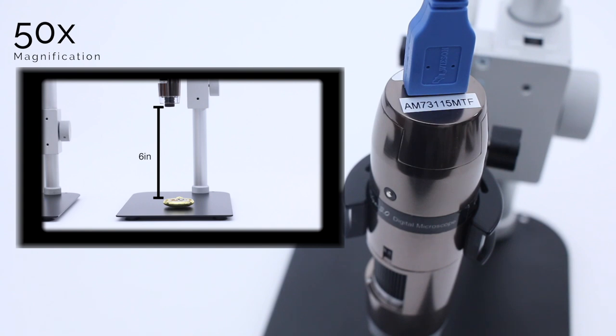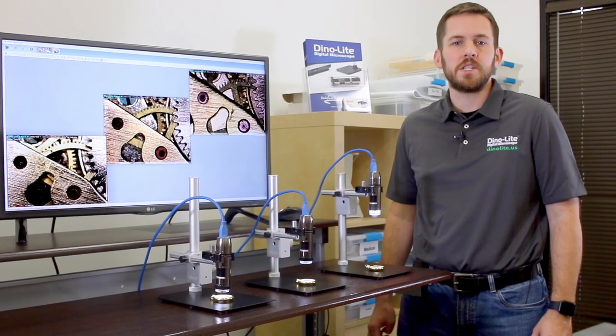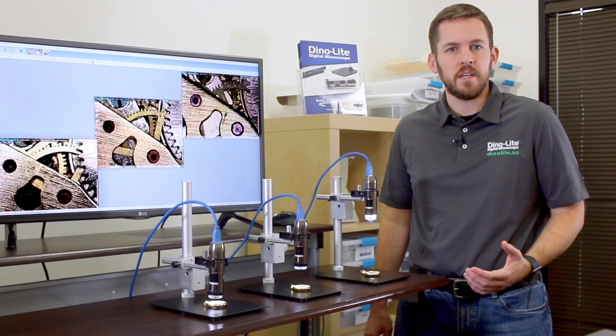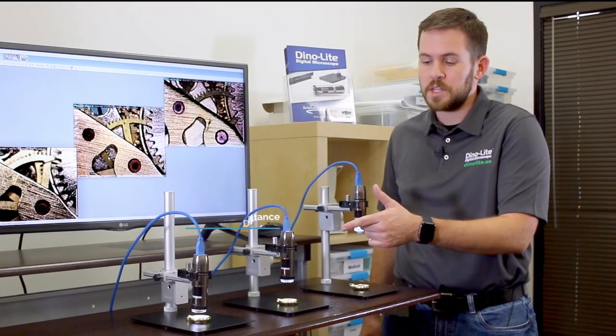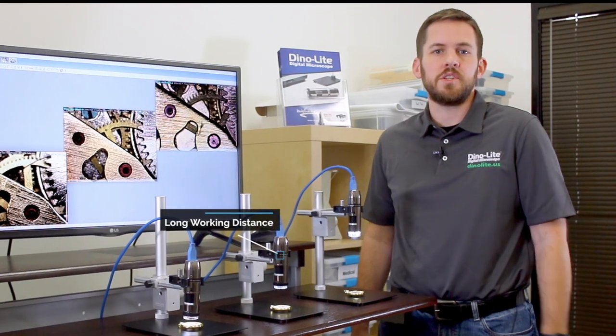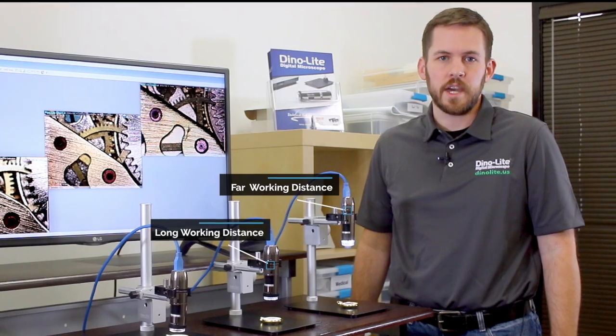Please keep in mind there is a trade-off for this extra distance. These working distance models are not able to provide as much magnification as our standard design which can do over 220x. For example, the long working distance model here maxes out at just over 140x and the far working distance style caps out at over 70x.